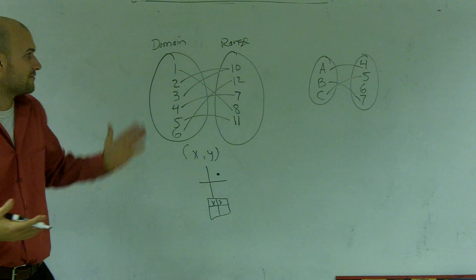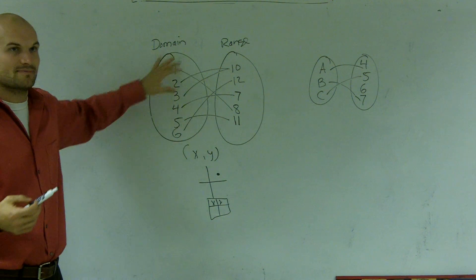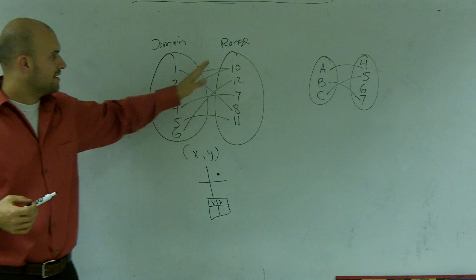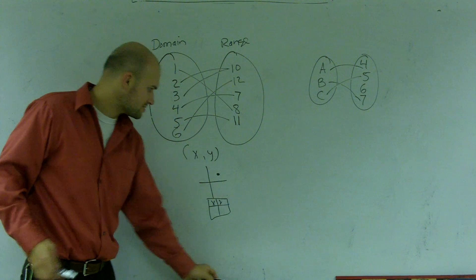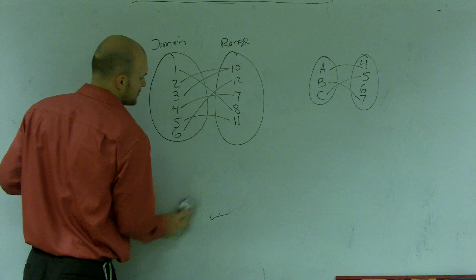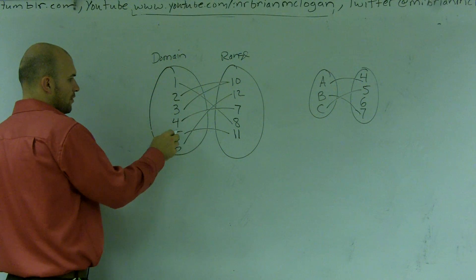If I want to figure out what is the domain and range when using a mapping problem, I simply can just take everything that's in my first circle as my domain. So the domain for the first problem is going to be 1, 2, 3, 4, 5, 6.